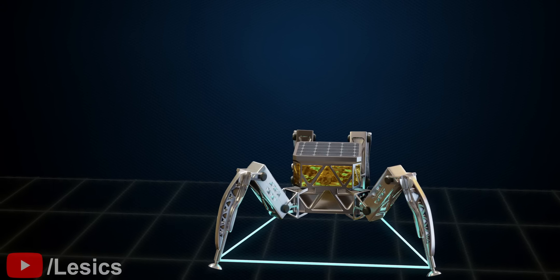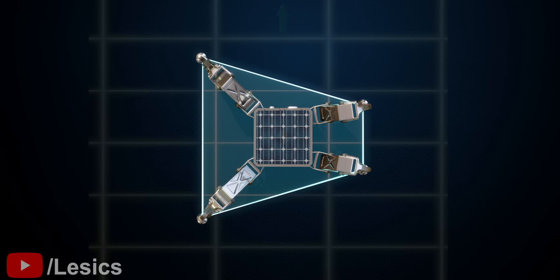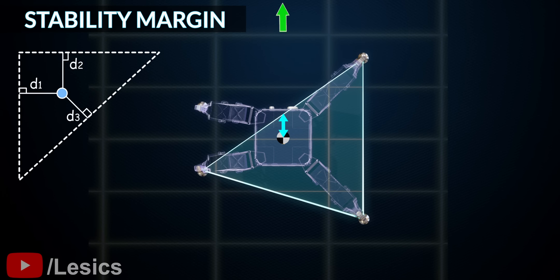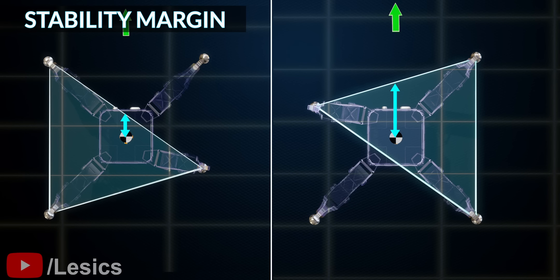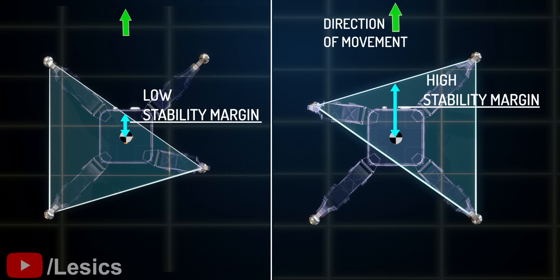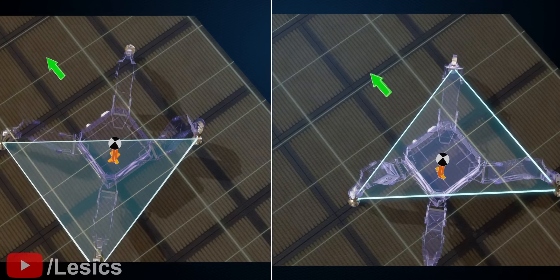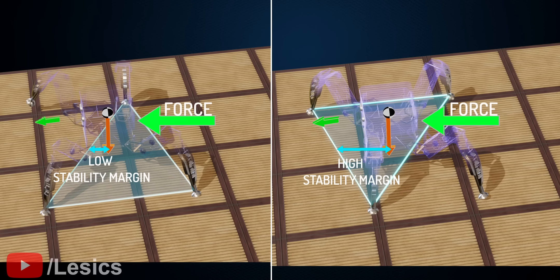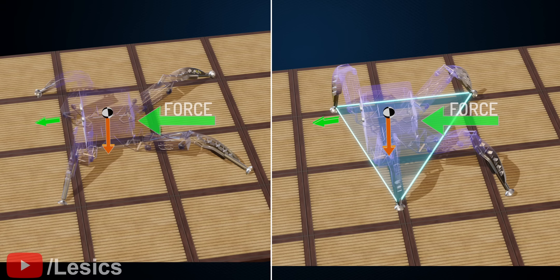However, we can improve stability even further by understanding a concept called stability margin. The stability margin is defined with respect to the direction of movement. Just by observing these visuals, you can easily understand what a stability margin is. A higher stability margin is always preferred since it is more likely to remain stable if an unexpected force or high momentum is applied.